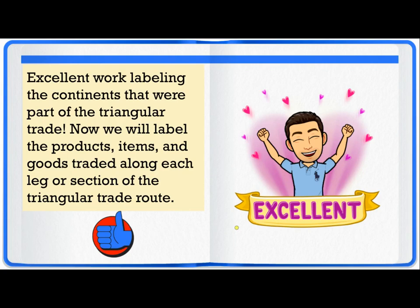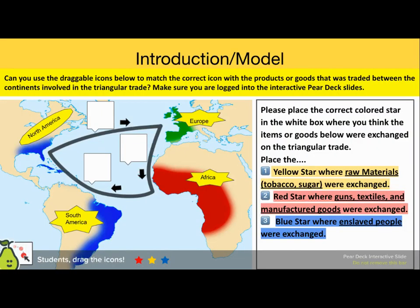Now we will label the products, items, and goods traded along each leg or section of the triangular trade route. Can you use the draggable icons below to match the correct icon with the products or goods that were traded between the continents involved in the triangular trade? Make sure you are logged into the interactive Pear Deck slides. The continents are labeled Europe, Africa, South America, and North America, and you will place the correct icons in the white boxes. Place the yellow star where raw materials such as tobacco and sugar were exchanged, the red star where guns, textiles, and manufactured goods were exchanged, and the blue star where enslaved people were exchanged. You can pause this video now to take a moment to complete this activity.